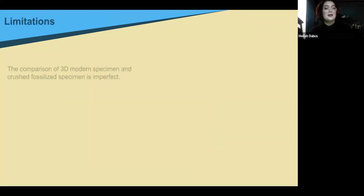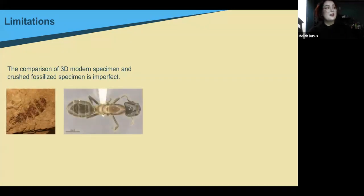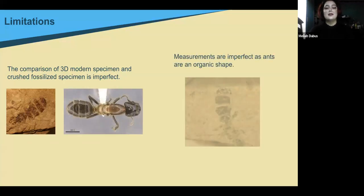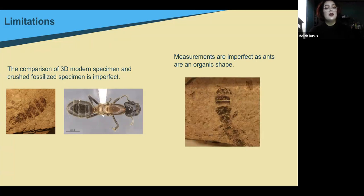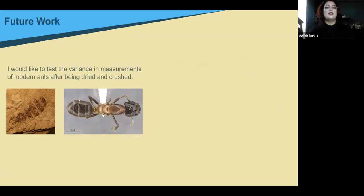With any research, there are limitations. Comparing a fossilized ant that was crushed under millennia of sediment to a modern 3D ant is imperfect. Also, the measurements are imperfect as ants are not box-shaped and can be very organically shaped, so one measurement of a thorax can be very different than another. We did test the variance on all sample measurements, and all of them were 1% or lower besides the thorax, which was 3%.